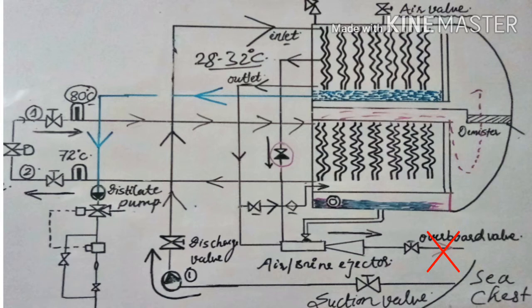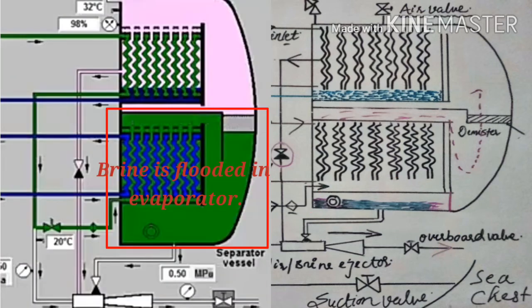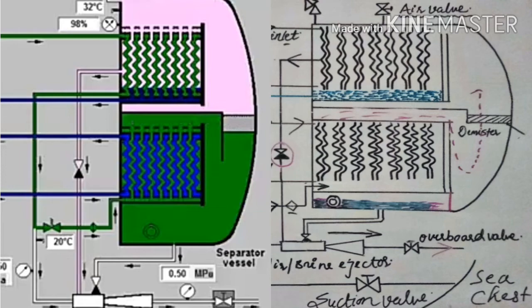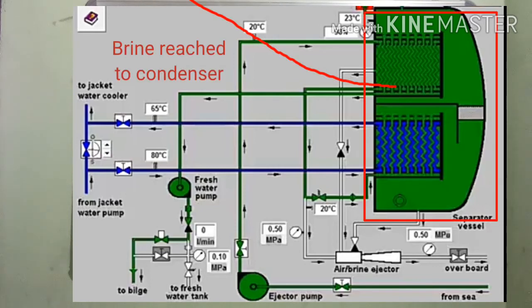When sea water evaporates, it leaves behind brine which is collected at the bottom of the evaporator. There is an arrangement called a brine ejector, and with its help the brine is overboarded through the overboard valve. If the overboard valve is closed but the fresh water generator is in operating condition, it is not possible to overboard the brine. So the brine level increases, the evaporator floods, and brine reaches the demister — which is made of fine metal mesh and gets torn out — and the brine level continues to rise until it reaches the condenser.